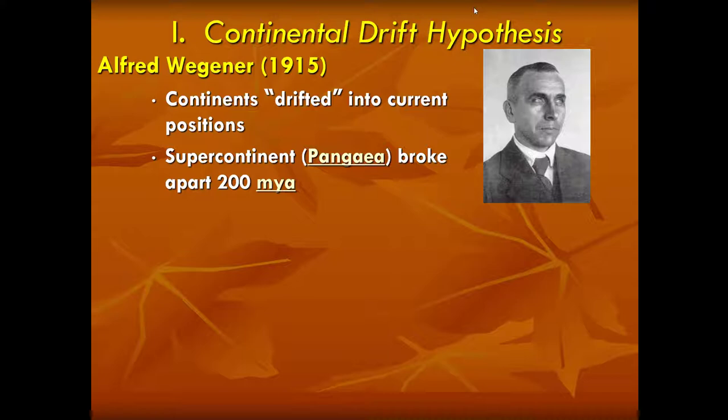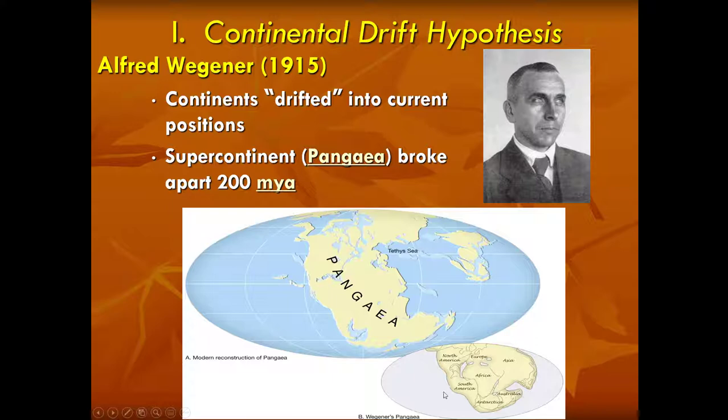Wegener came up with the concept of Pangaea, a supercontinent he estimated — and data later supported — broke apart about 200 million years ago. Here is Wegener's Pangaea in the bottom corner. You've probably heard of Pangaea before; it translates to 'all land' or 'all earth.' What Wegener did was essentially close up the Atlantic Ocean, bringing all the major continents back together to form this supercontinent.